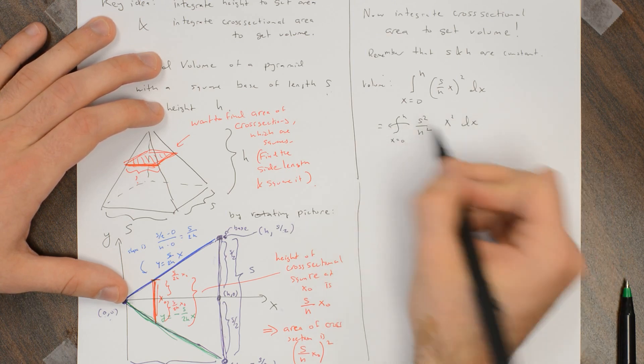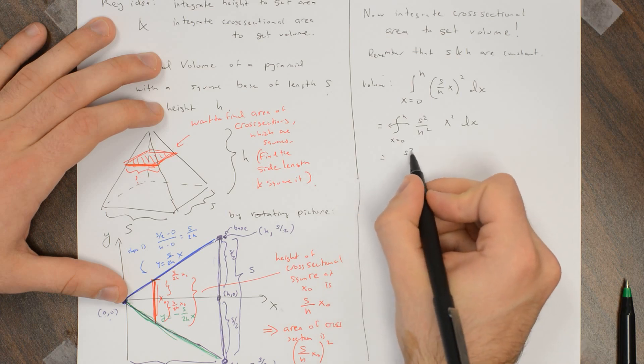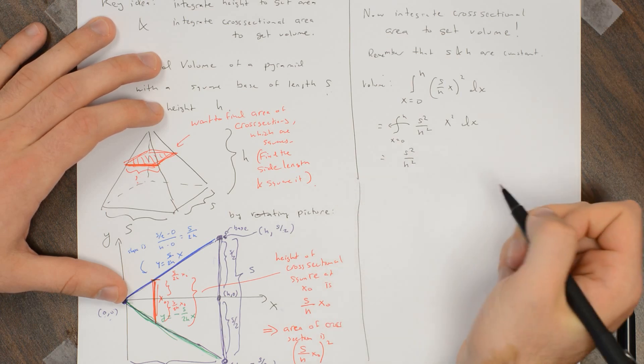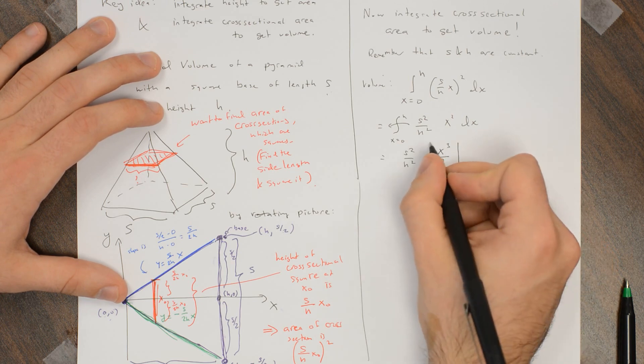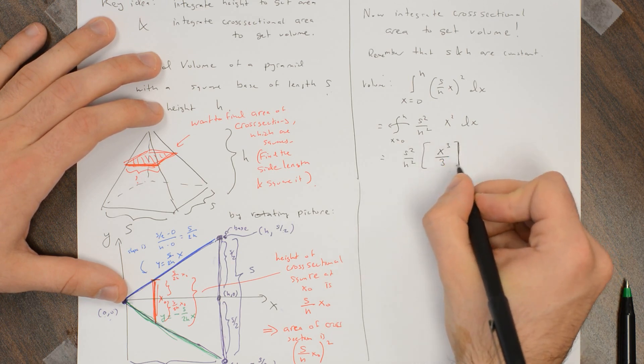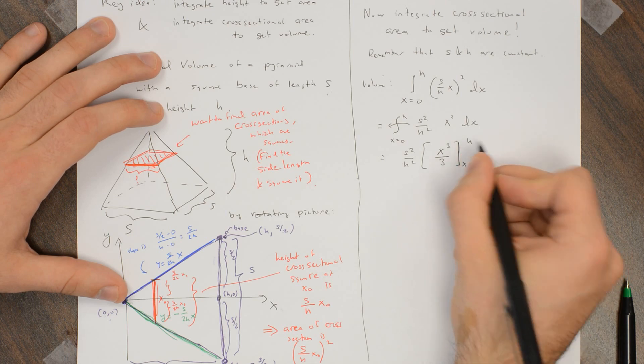And I can pull this constant out. So this is s squared over h squared times the integral of x squared, so an antiderivative of that is x cubed over 3, evaluated from x equals 0 to h.